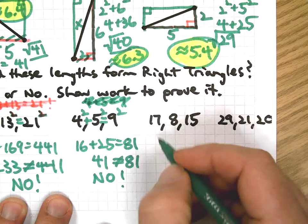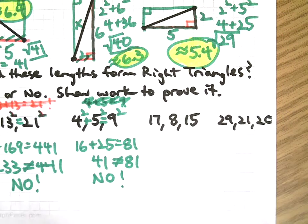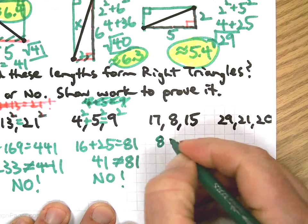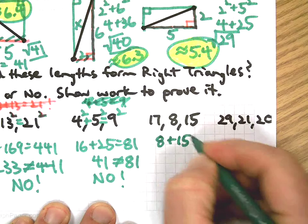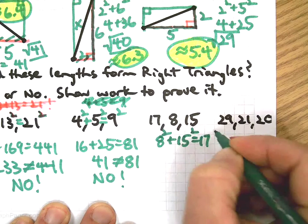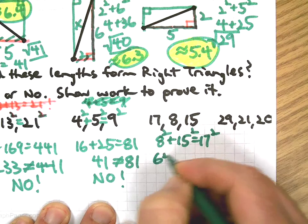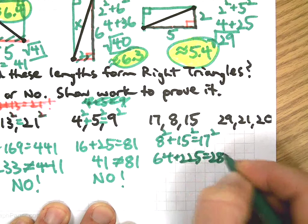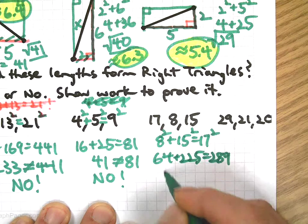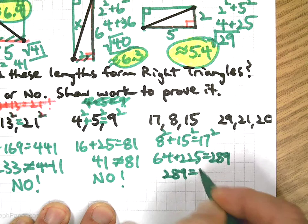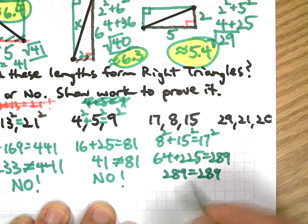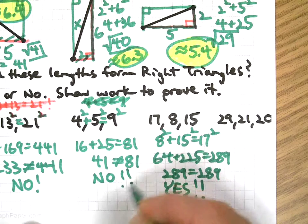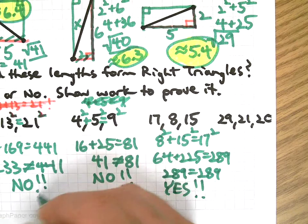Okay, finally two more. This one, they're out of order. No, you're out of order. Put them in order. Square them. 64, 225, 289. Oh, you can see this one coming a mile away. Look at that, looky there, that's a yes.